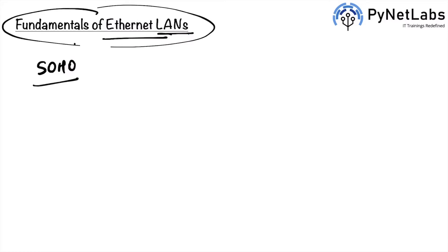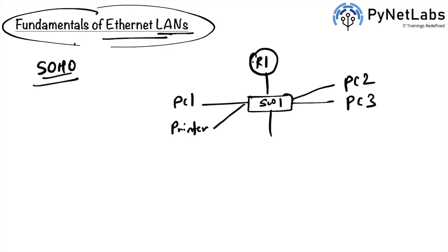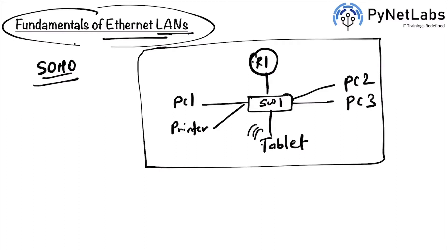In a SOHO setup, you can have a router — let's call it R1 — then a switch called SW1, and then many devices connected to it: PC1, a printer, PC2, PC3, and a tablet connected wirelessly. This router will of course be connected to the ISP, where internet access is provided to all devices on the network.